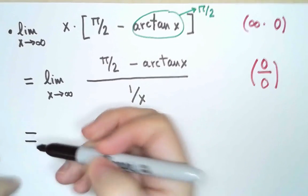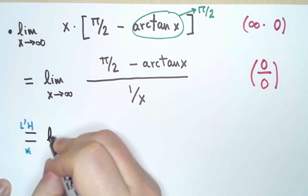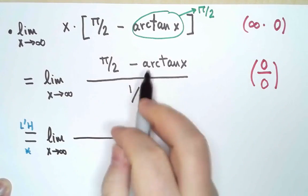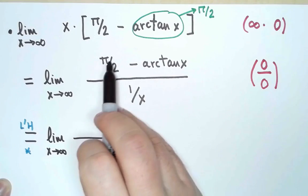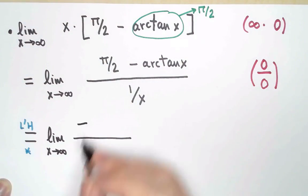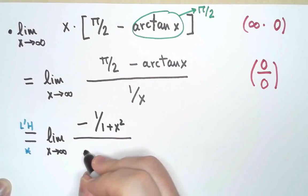So let's do that. I'm going to use L'Hôpital's rule and see if it works. According to L'Hôpital's rule, this limit will be equal, if this new limit exists, to the derivative of the numerator. The derivative of π over 2 is 0, and the derivative of arctan x is 1 over 1 plus x squared. And the derivative of 1 over x is minus 1 over x squared.